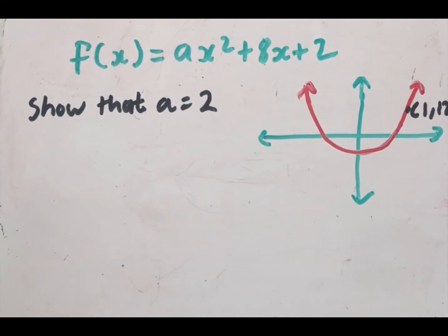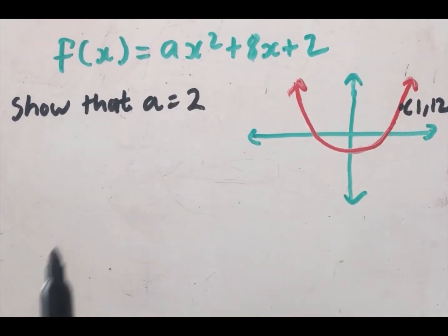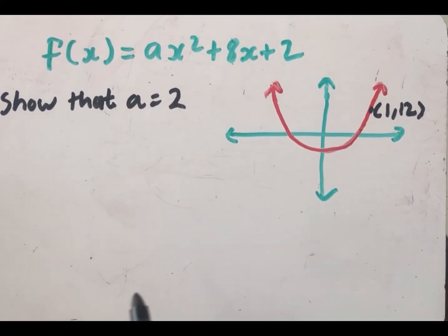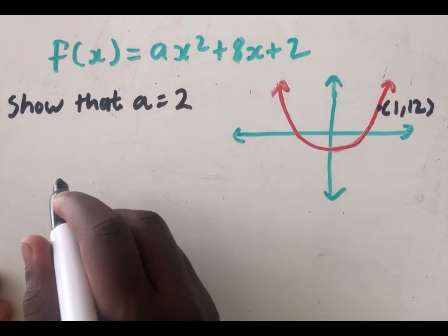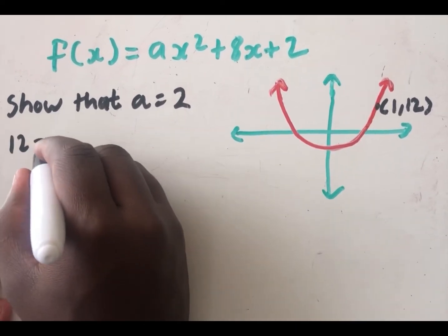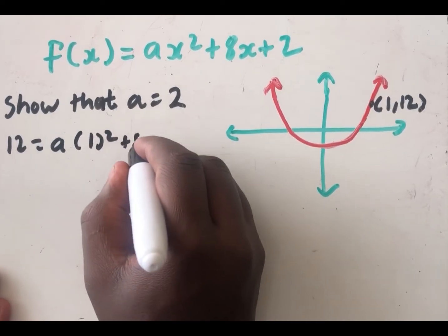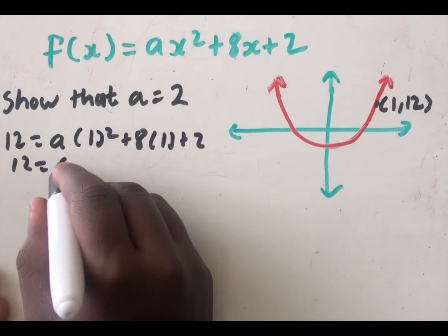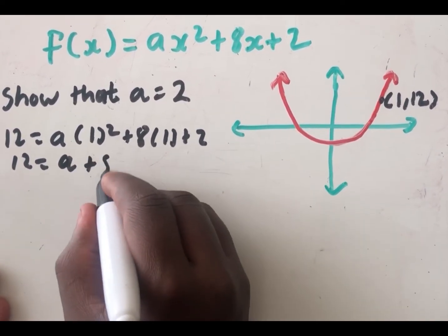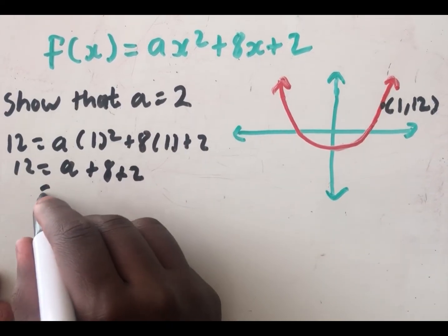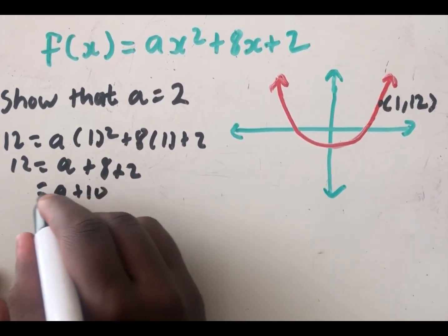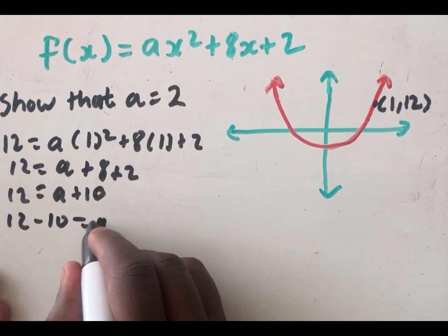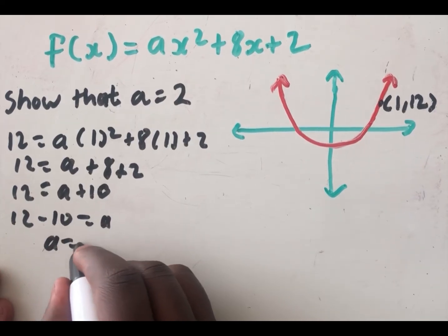The final situation is where there is one unknown. When there's one unknown — either a or b — you just substitute one point and solve. Substituting the point (1, 12): 12 = a(1²) + 8(1) + 2 = a + 8 + 2 = a + 10. So 12 − 10 = a, giving a = 2.